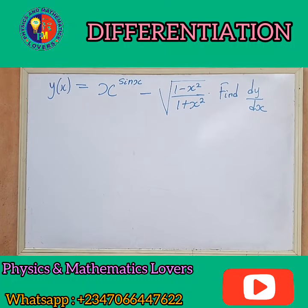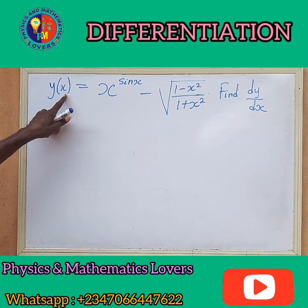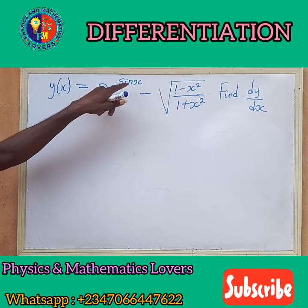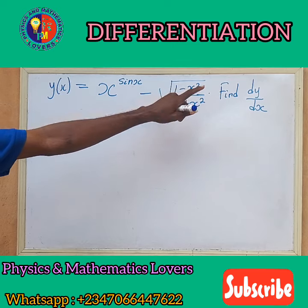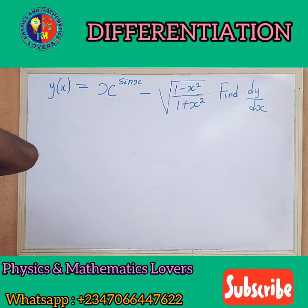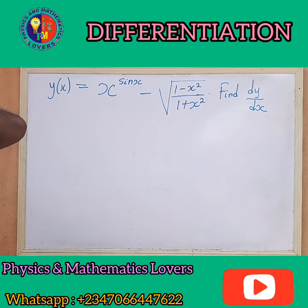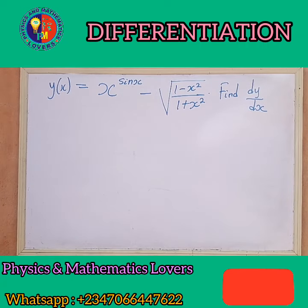Good day everyone and welcome to today's tutorial. Before us here is a question on calculus, and the question says y is a function of x equal to x exponent sin x minus the square root of 1 minus x squared, all over 1 plus x squared. This question is very complex — it was sent to me by a student from the University of Australia, Mechanical Engineering 200 level. Let us look at it systematically. We are going to solve it now.